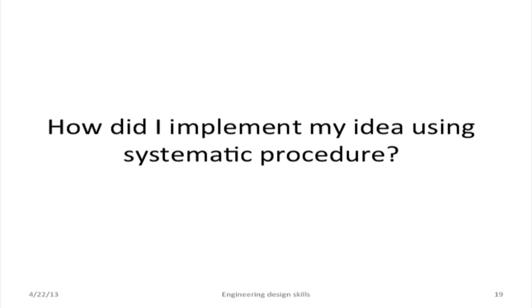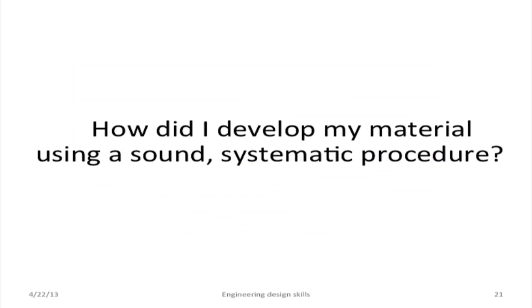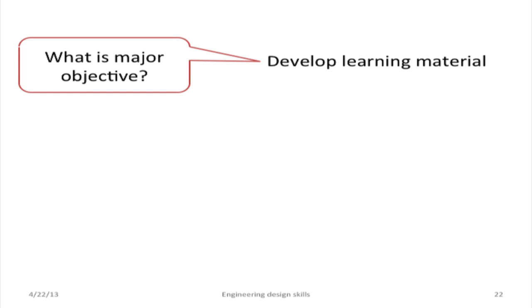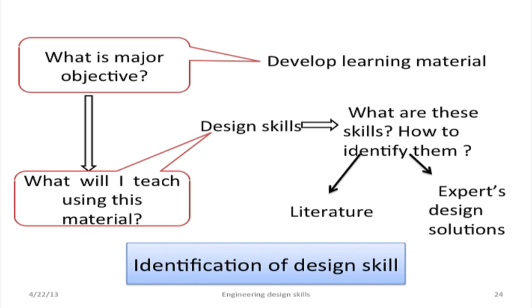How did I implement my idea using a systematic procedure? I identified design skills, measured sub-competencies, generated activities, and then tested with students. Now, how did I develop my material using a sound and systematic process? My major objective is to develop learning material to teach design skills. What are these skills and how should I identify them? First, I surveyed literature and analyzed expert design solutions, and together I identified design skills.